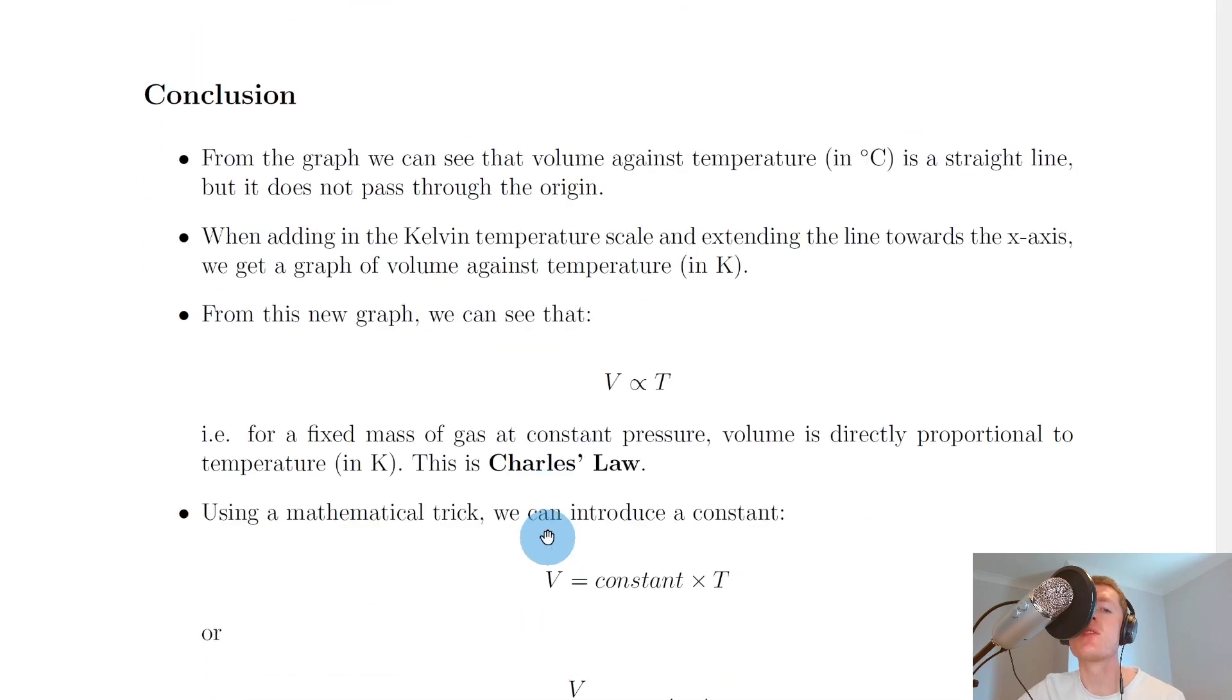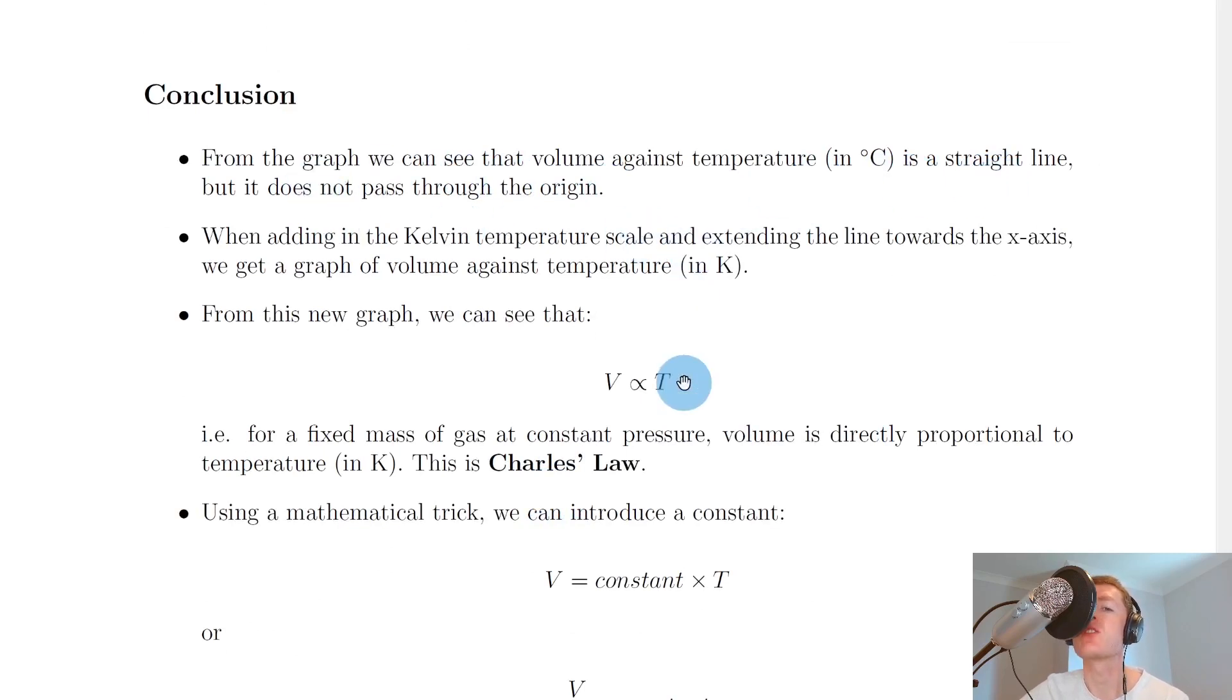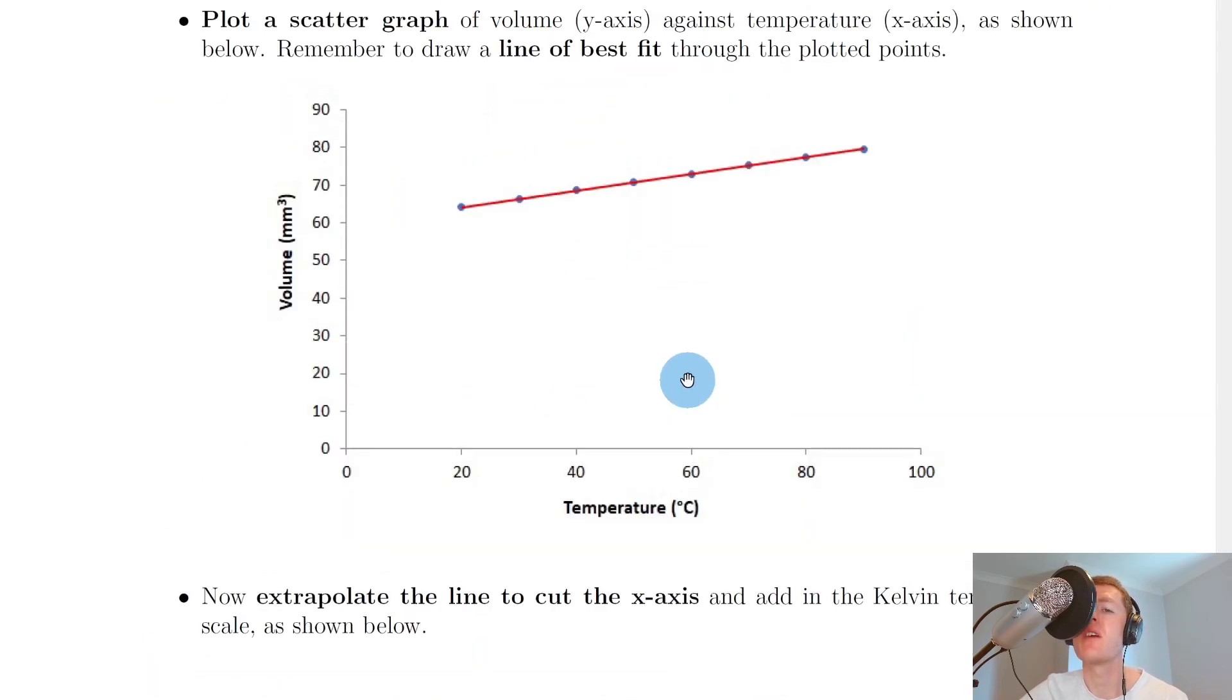We can conclude from the graph that volume against temperature in degrees Celsius is a straight line but it does not pass through the origin. That was the first graph—a straight line but it doesn't pass through the origin.